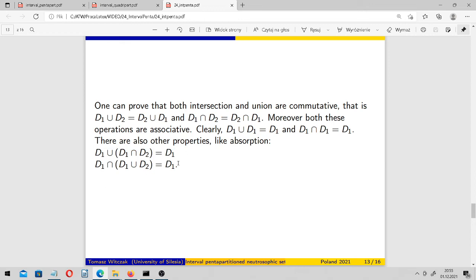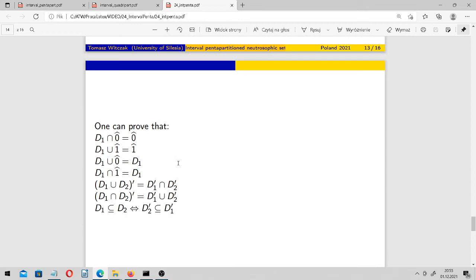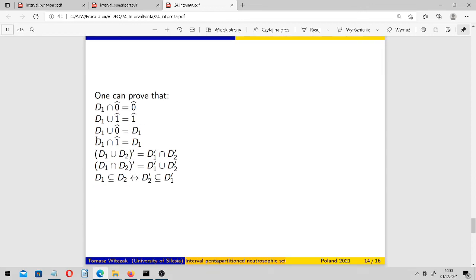So they are very typical for the algebra of sets and the same can be said about this. As you can see, an intersection of an arbitrary set D1 and empty set gives us empty set. Union of D1 and 1 gives us unity.